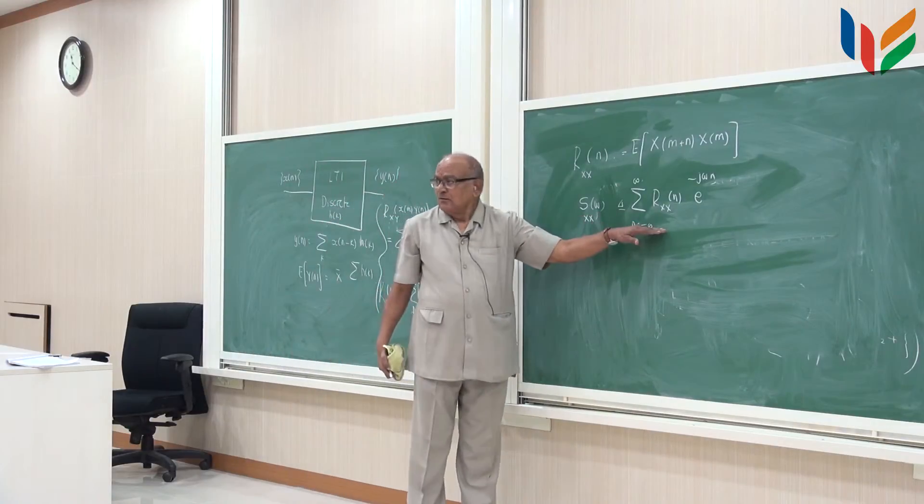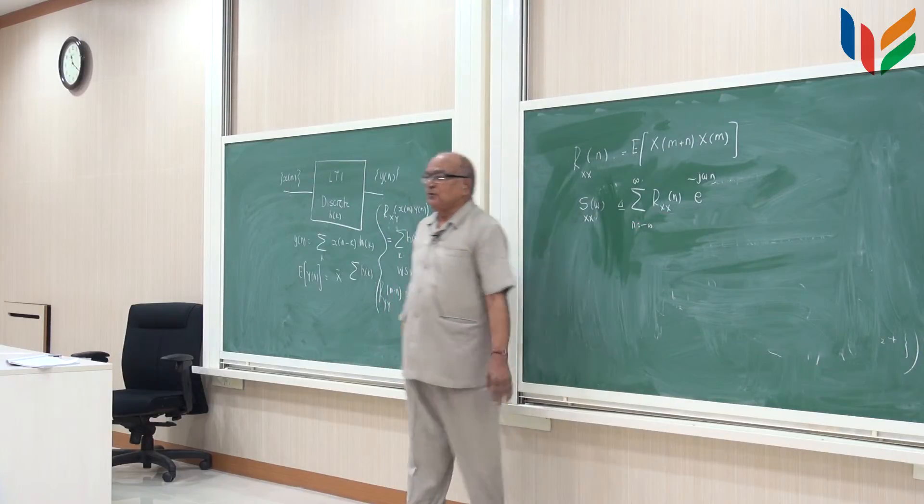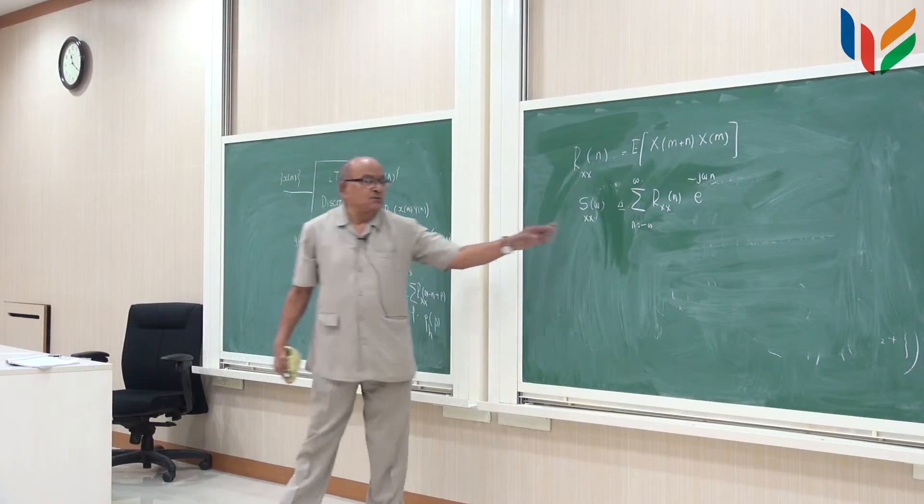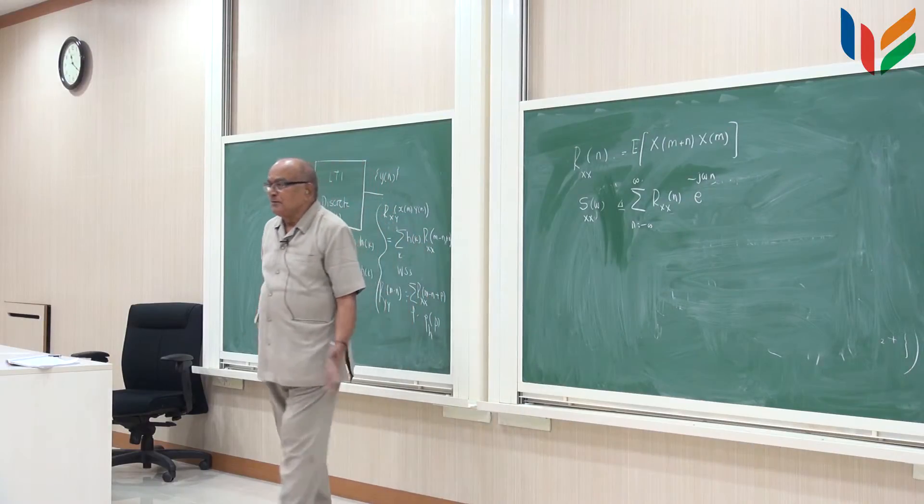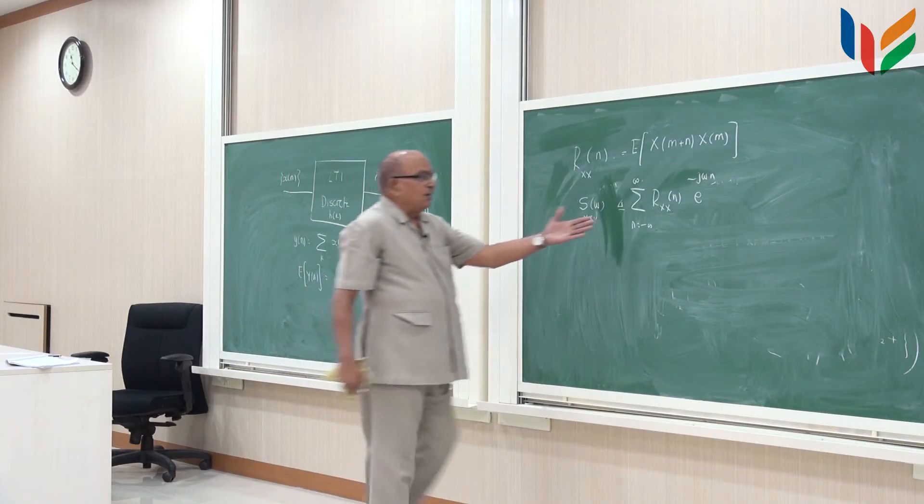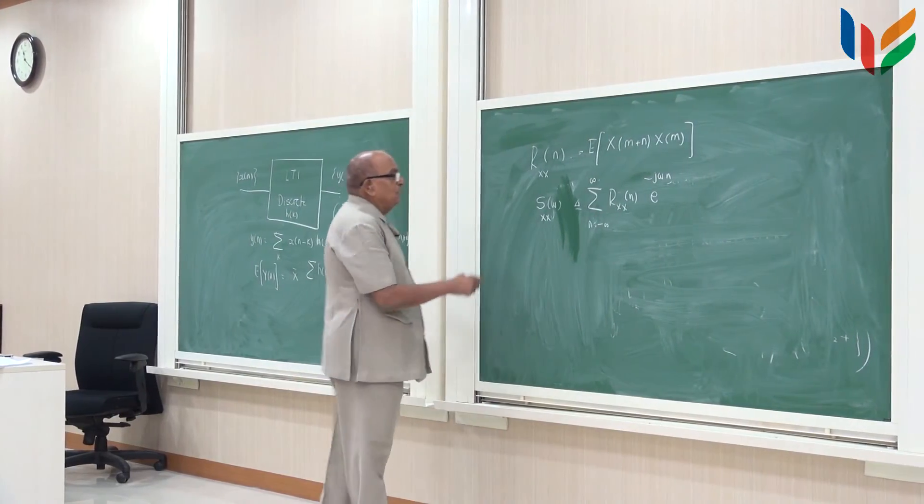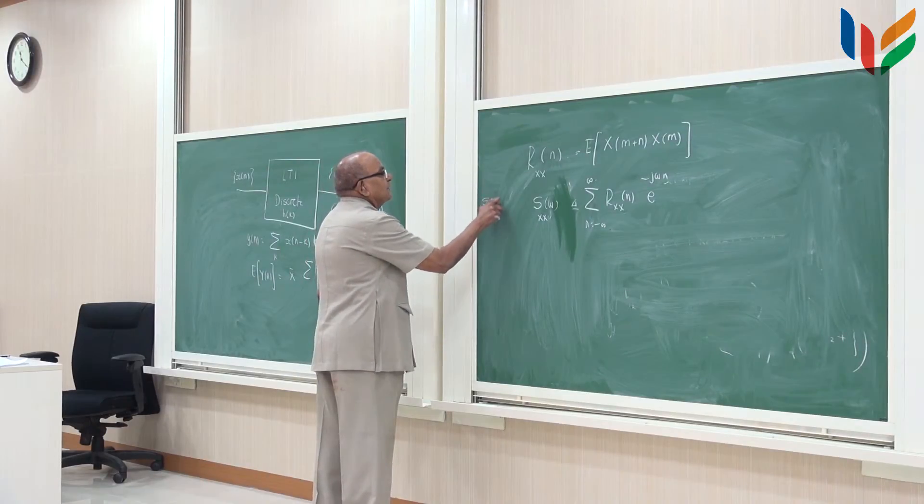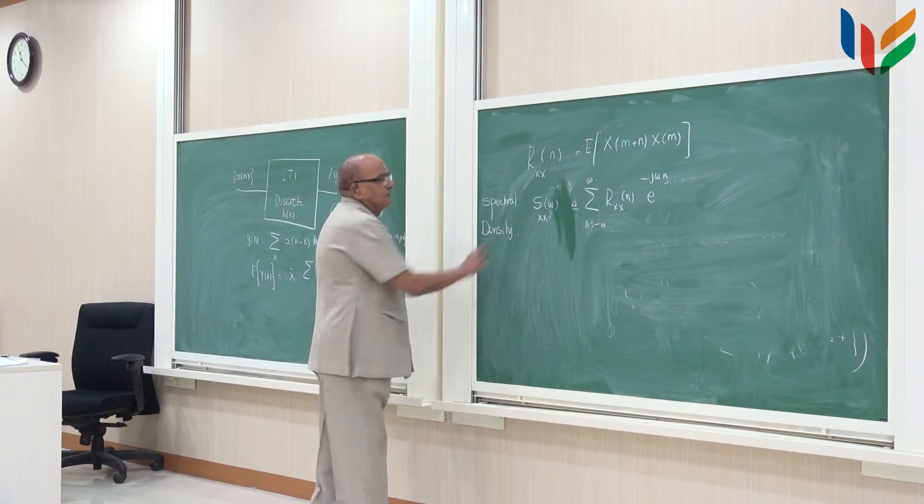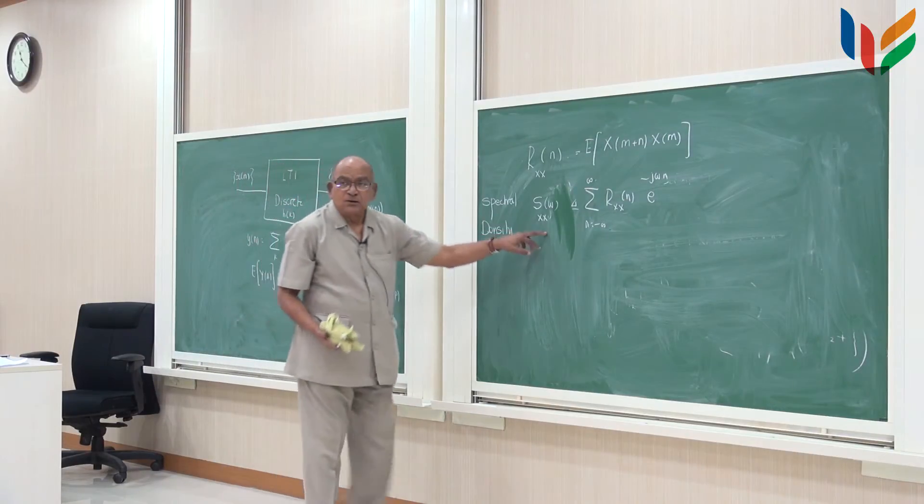These are some numbers with index of n. I take these numbers and multiply e to the power of j omega n and sum them up. And this is, what does it remind you? Remind you like a Fourier transform? So it is like a Fourier transform of this correlation function. So this is called spectral density. This is spectral density of the process x.